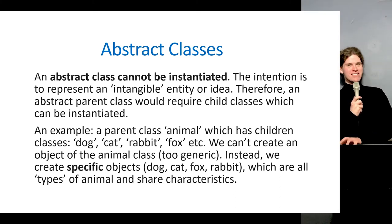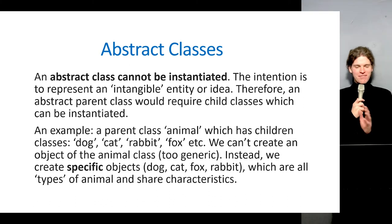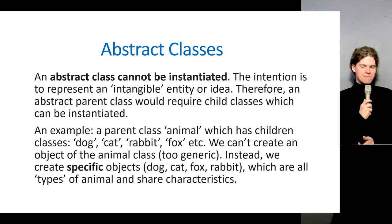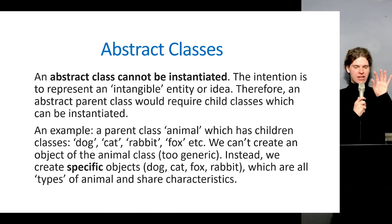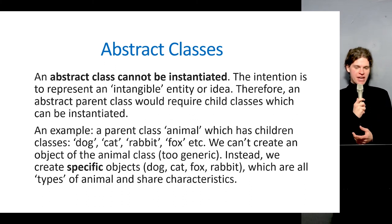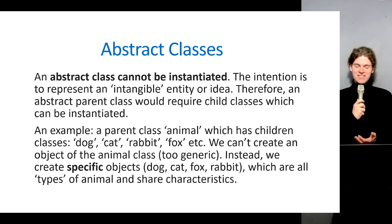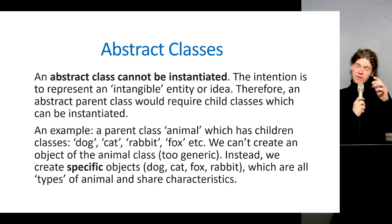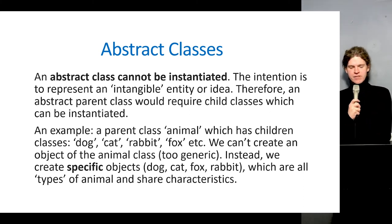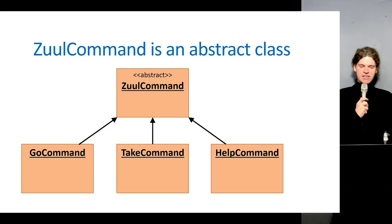We don't just have a generic animal that isn't one of those specific types. But we can create an abstract Animal class to group the combined characteristics and behaviors these specific instances share in common — like having four legs or a pair of eyes. We can declare variables and methods within abstract classes which are then inherited in the children, and we create objects of the children rather than the parent.